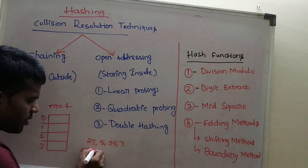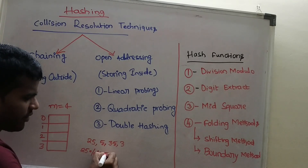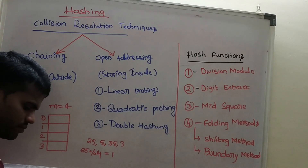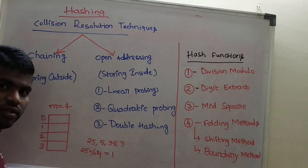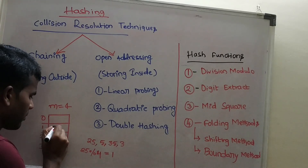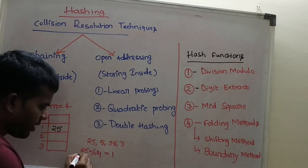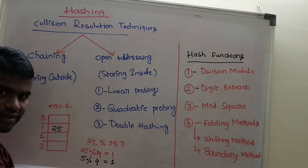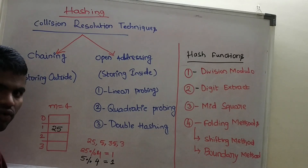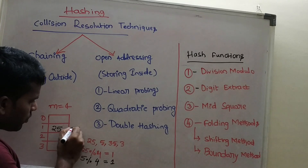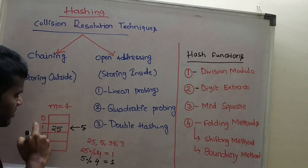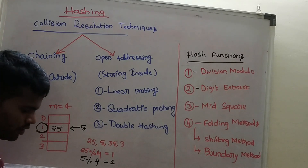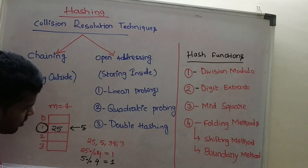Now 25 mod 4 gives 1. So in address 1, I am keeping 25. Then 5 mod 4 also equals 1. So again I have to place 5 in slot 1. But already 25 is in this location, so here there is a problem.